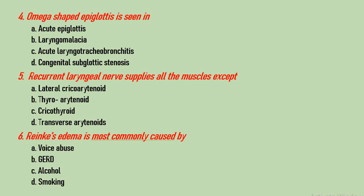Question number 4: omega-shaped epiglottis is seen in which condition? Options are acute epiglottitis, laryngomalacia, acute laryngotracheobronchitis, and congenital subglottic stenosis. The correct answer is laryngomalacia. Acute epiglottitis leads to turban-shaped epiglottitis — very swollen. Laryngomalacia is due to flaccidity of the supraglottic larynx, which leads to omega-shaped epiglottis. In acute laryngotracheobronchitis the clinical signs are very apparent, and in congenital subglottic stenosis the infant develops stridor.